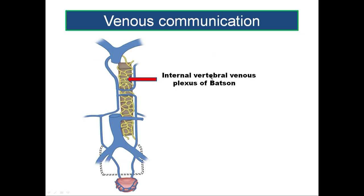The prostatic veins also communicate with the internal vertebral venous plexus of Batson through veins passing through the lateral sacral foramina. Whenever there is carcinoma of the prostate, metastasis via veins can happen through the internal vertebral venous plexus of Batson, reaching the vertebral column and the skull. This communication can carry carcinomatous cells, bringing about metastasis into the vertebral body or the skull.